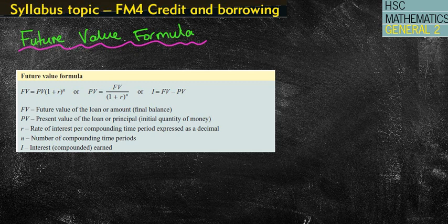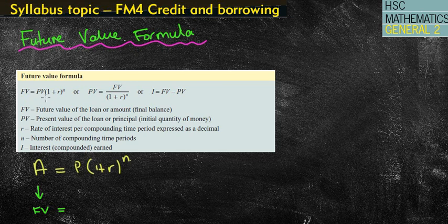To be honest with you, the future value formula is exactly the same as your compound interest formula. There's not too much that is actually different. We have FV, which is future value, that's your total value, your final value, your total amount. Your PV is your present value, what it's worth today, and in terms of the compound interest formula, that is your principle, what you originally put in. You still have your 1 plus your rate as a percent per annum, and your N is the number of compounding periods.